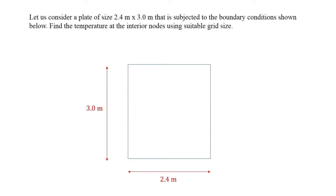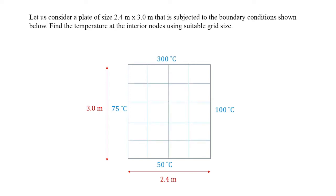Let us consider a two-dimensional plate of size 2.4 meters by 3 meters subjected to boundary conditions shown below. The right end of the plate is maintained at 100 degrees Celsius and the left end is maintained at 75 degrees Celsius. The top end is at 300 degrees Celsius whereas the bottom boundary is maintained at 50 degrees Celsius. It has been asked to find the temperature of the intermediate domain nodes using a suitable grid size.